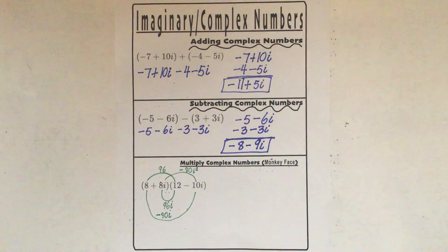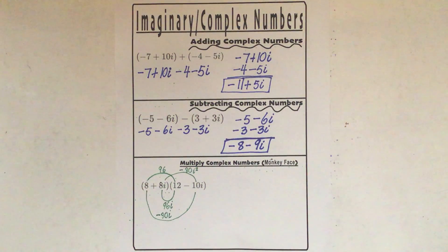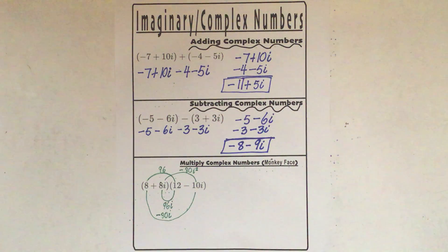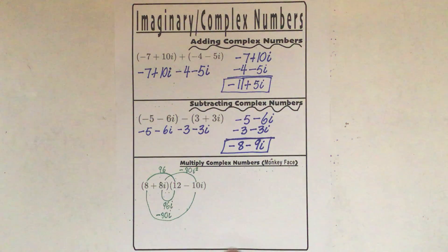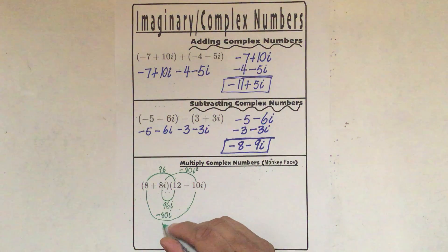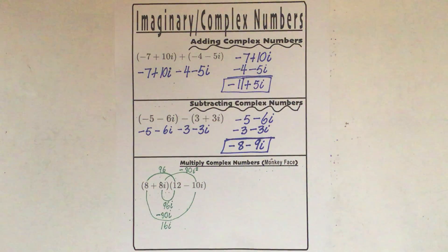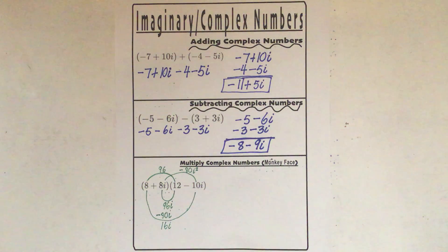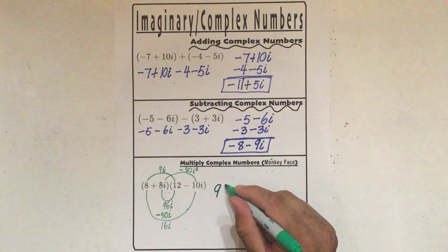So as you can see, the eyebrows, the nose, the mouth, and the ears. It's kind of corny, right? That's okay. Now I take the nose and the mouth and I subtract — that's 96i minus 80i is 16i. So now I'm going to take the first number I got, which was 96, and bring it over here and write it just like this: 96.